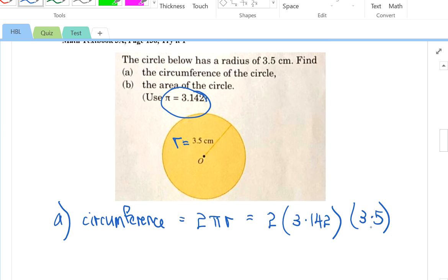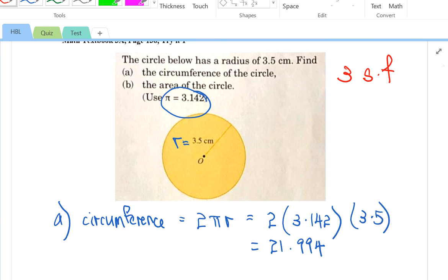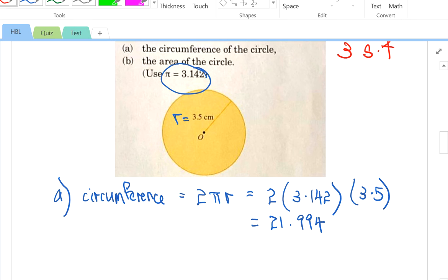Now, can you pause and press the calculator? I got the answer. Please take note. All answers need to be corrected to 3 significant figures because 3.142 is an estimated answer. I say again, all answers must be corrected to 3 significant figures. If I need to correct to 3 significant figures for this 21.994, let's take a look.